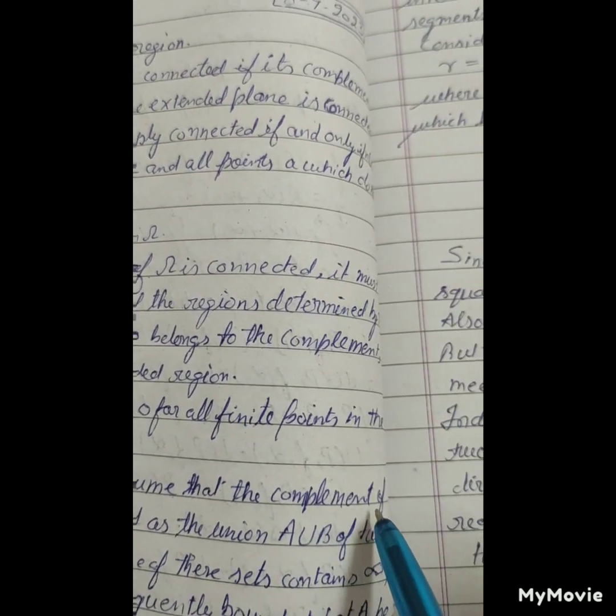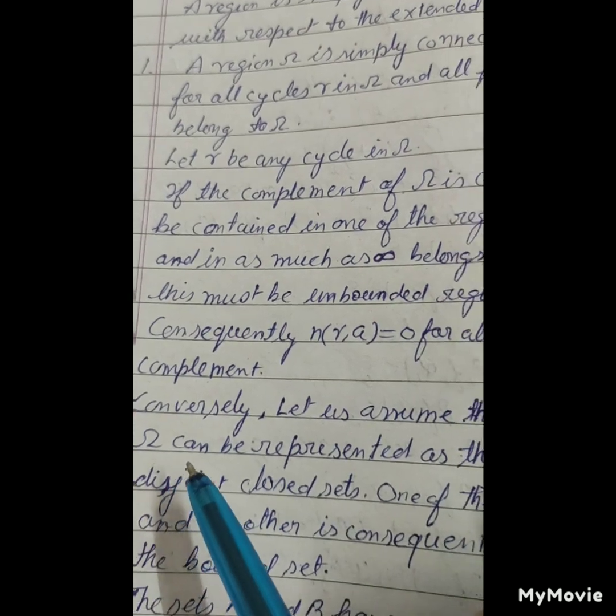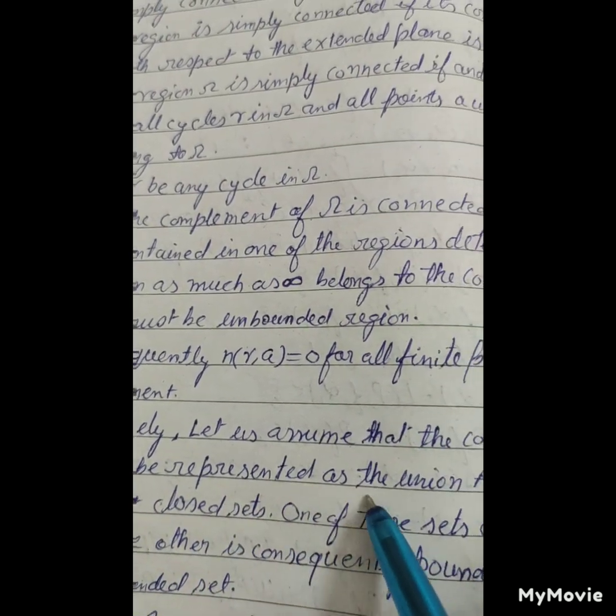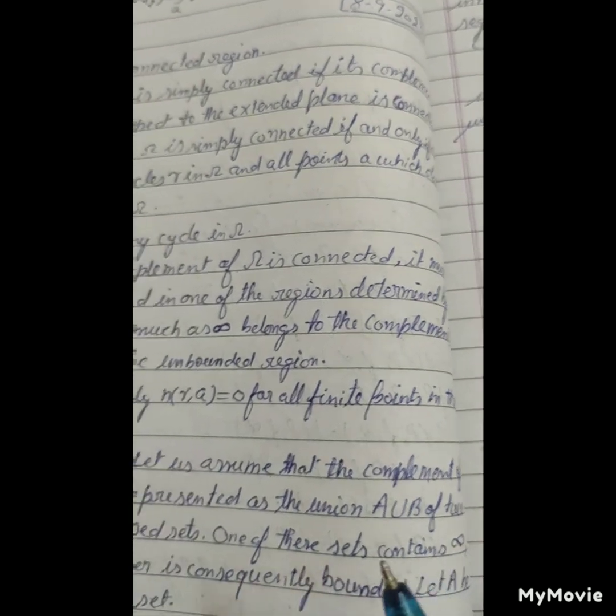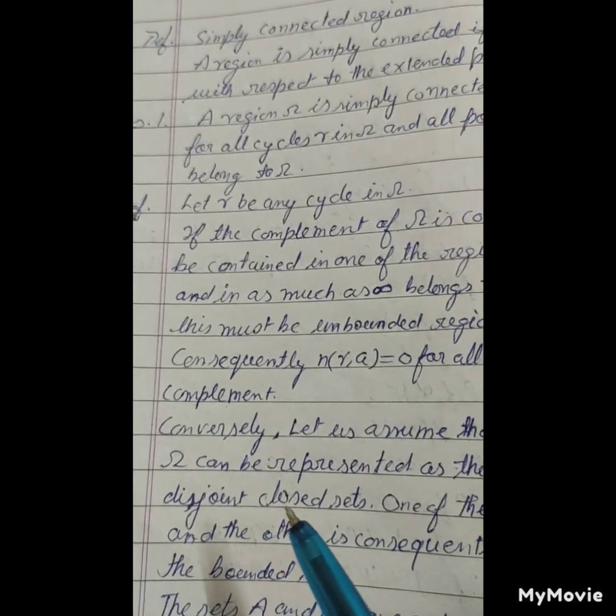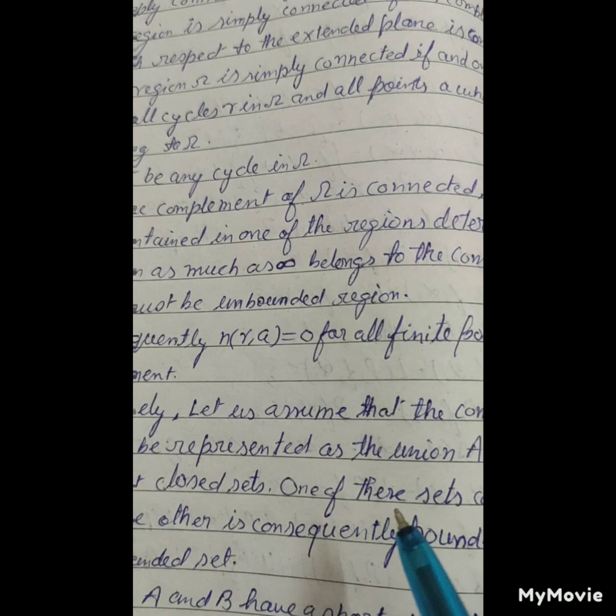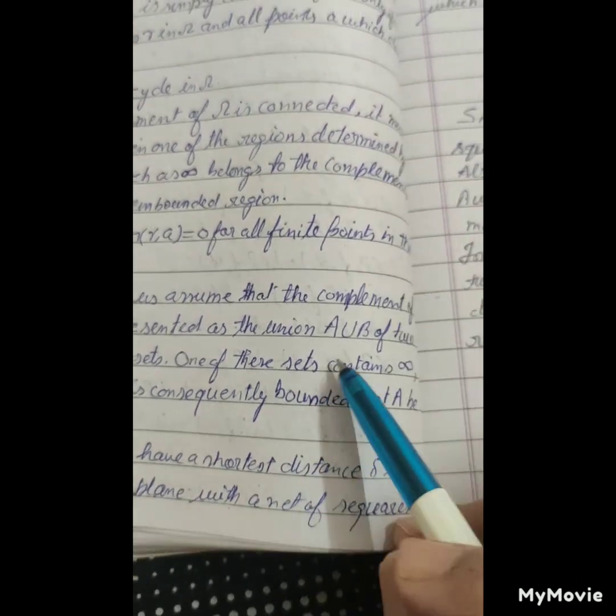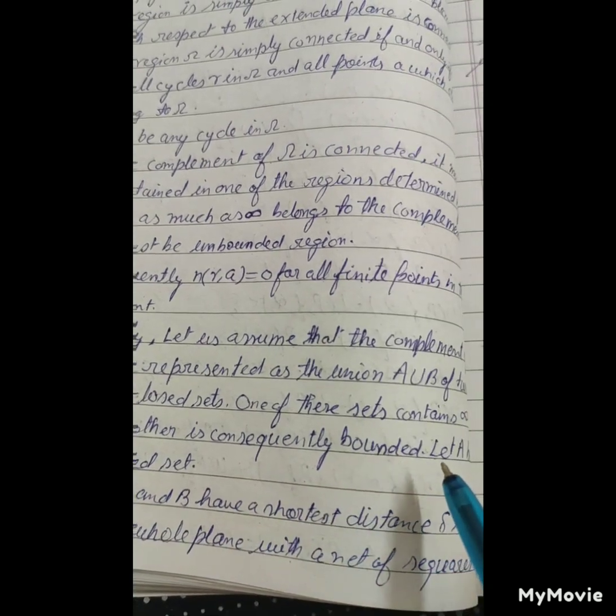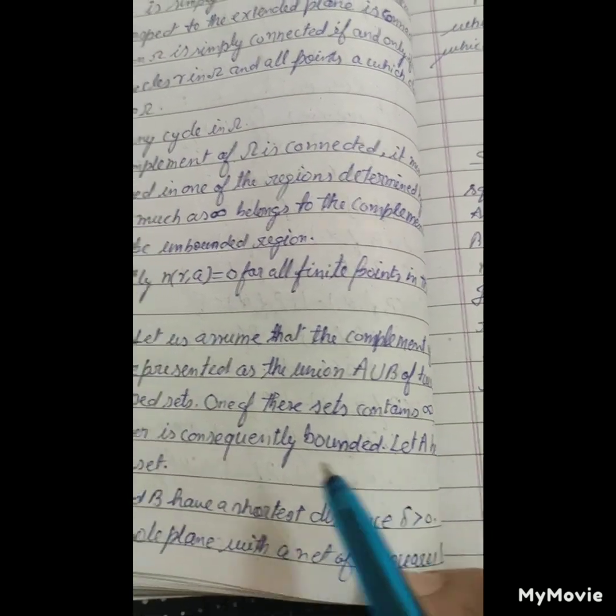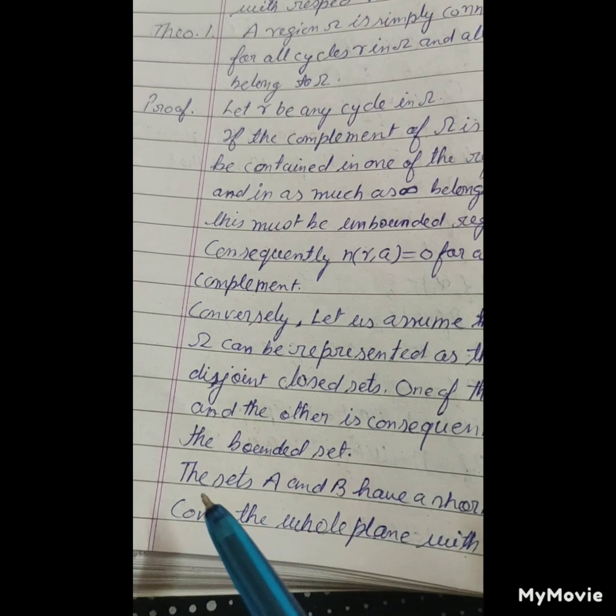Consequently, let us assume that the complement of omega can be represented as the union A union B of two disjoint closed sets. One of these sets contains infinity and the other is consequently bounded. Let A be the bounded set.